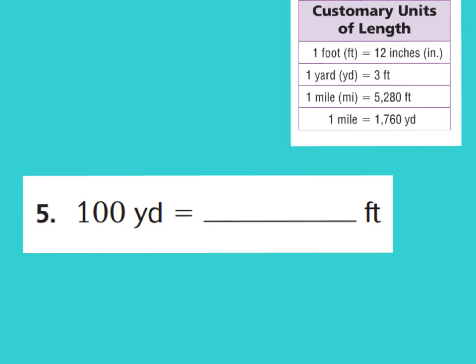Let's take a look at number 5. Number 5 says 100 yards equals how many feet? Looking at our chart, we know 1 yard equals 3 feet, and yards are bigger than feet. So we're going from a large unit of measurement to a smaller one — we're going to multiply because we'll have more feet than yards. So 100 times 3 equals 300 feet. If you said 300 feet, you were absolutely right.